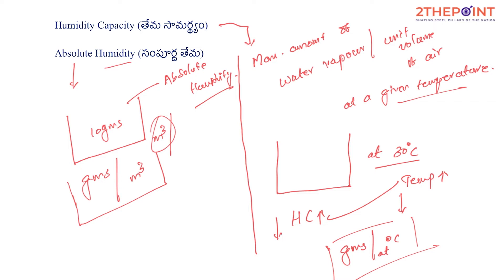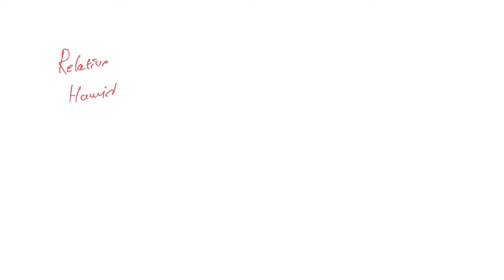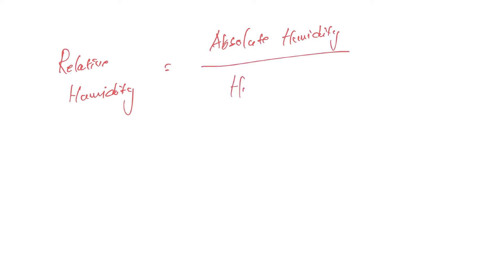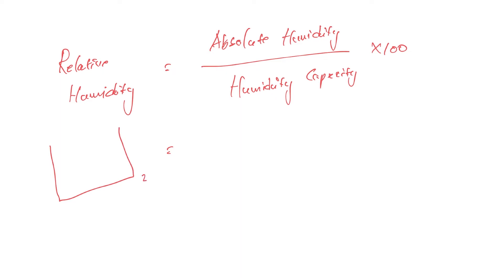Now let's do relative humidity. Relative humidity is given by absolute humidity divided by humidity capacity. Let's do a simple example. There is a unit volume of air. The temperature is 30 degrees Celsius. There is 8 grams of moisture — this is the absolute humidity. And the unit volume of air holds 8 grams at this temperature of 30 degrees Celsius.